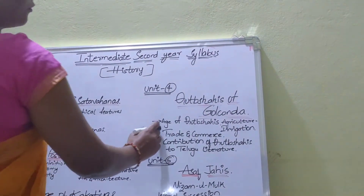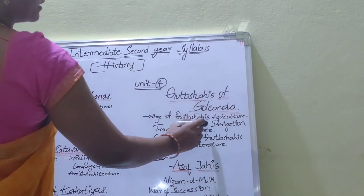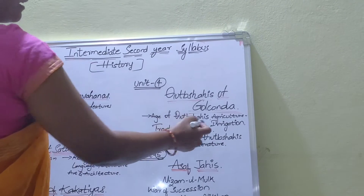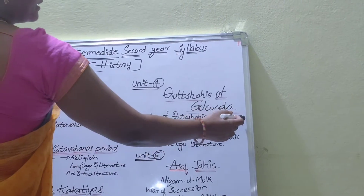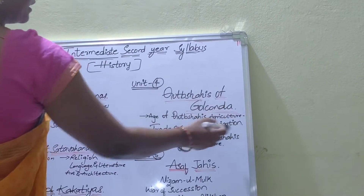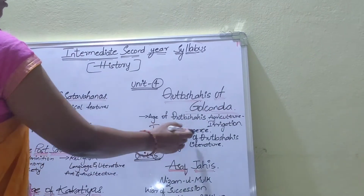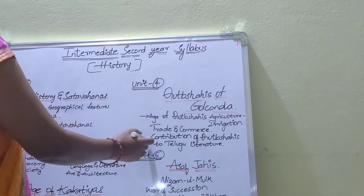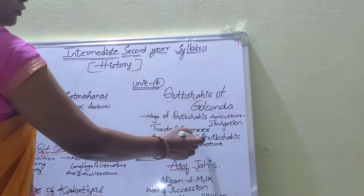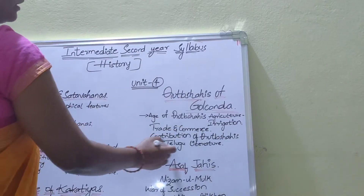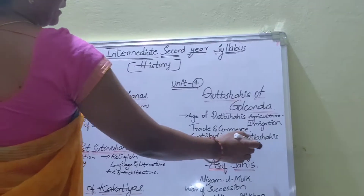The fourth chapter is Kutubshahis of Golkunda. The Age of Kutubshahis covers Agriculture, Irrigation, Trade and Commerce, and the Contribution of Kutubshahis to Telugu Literature.